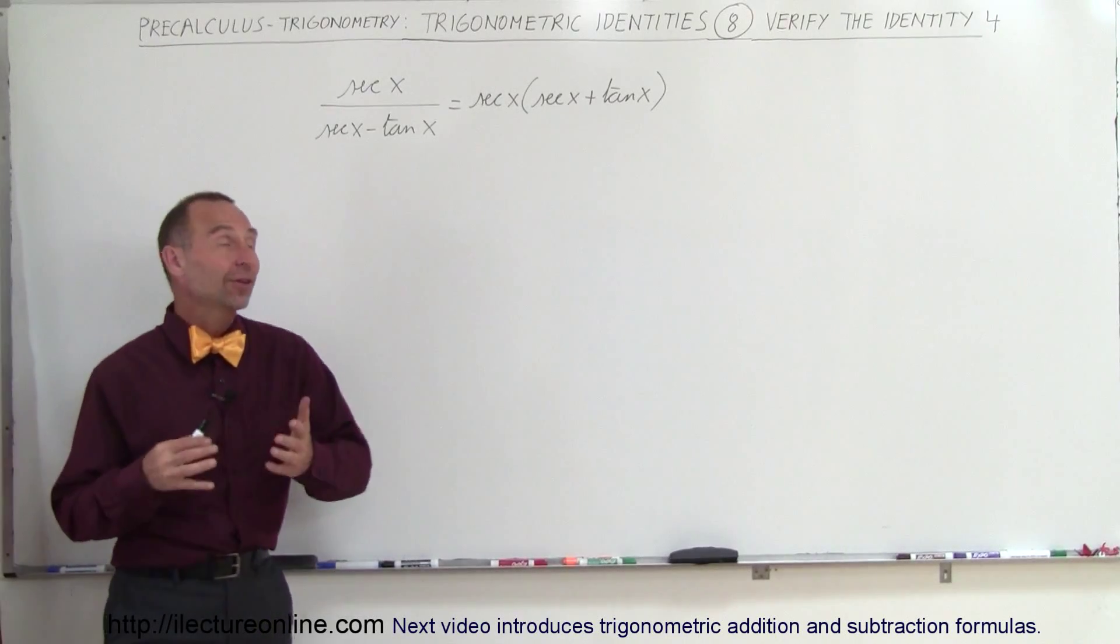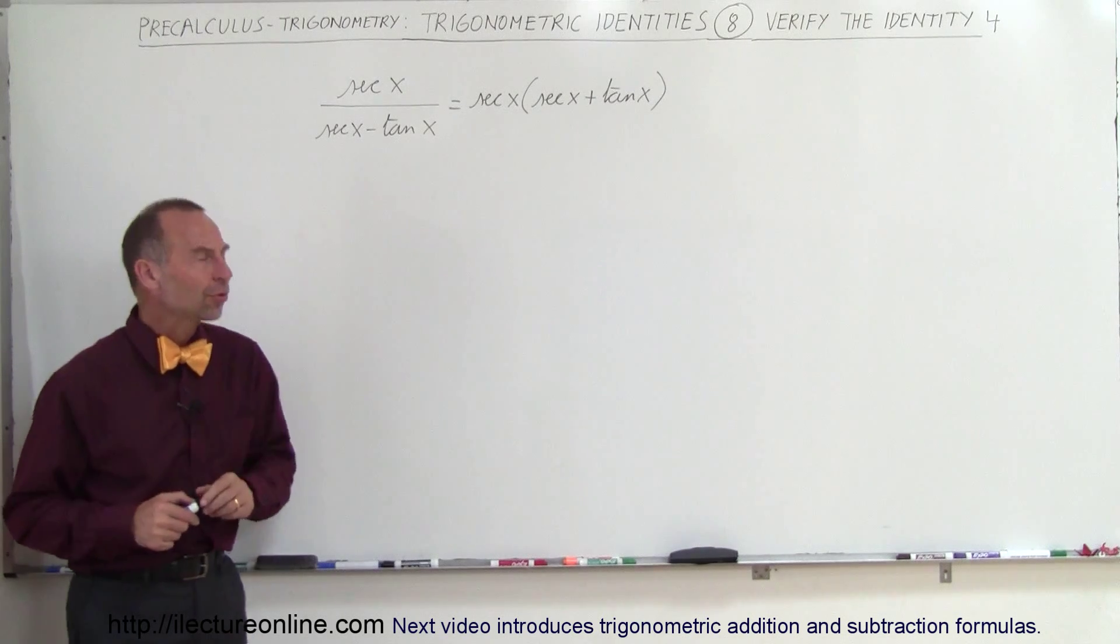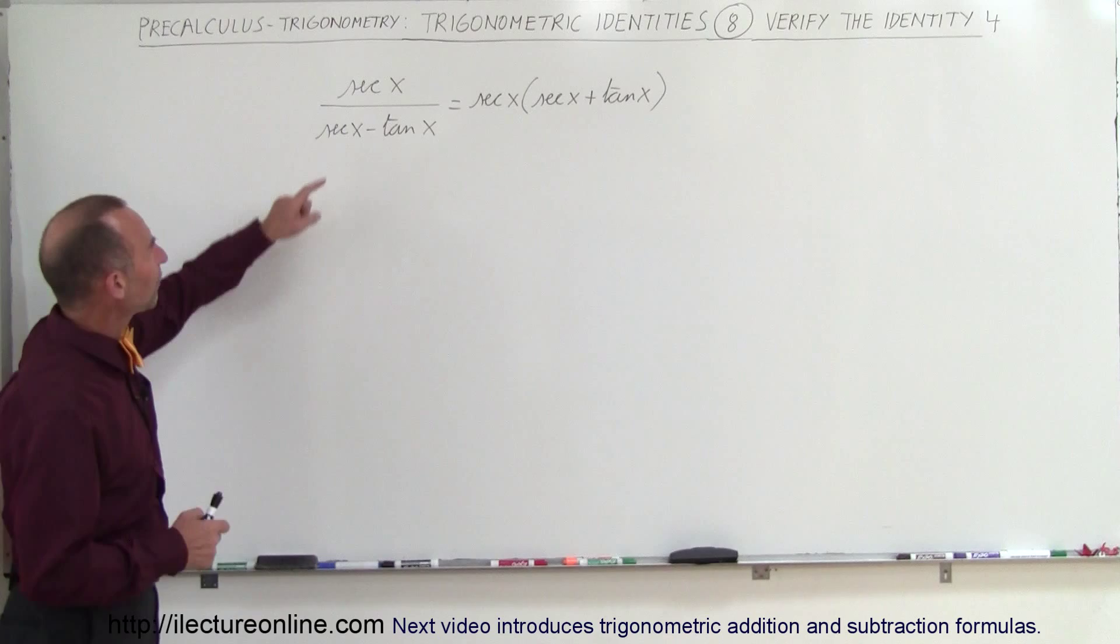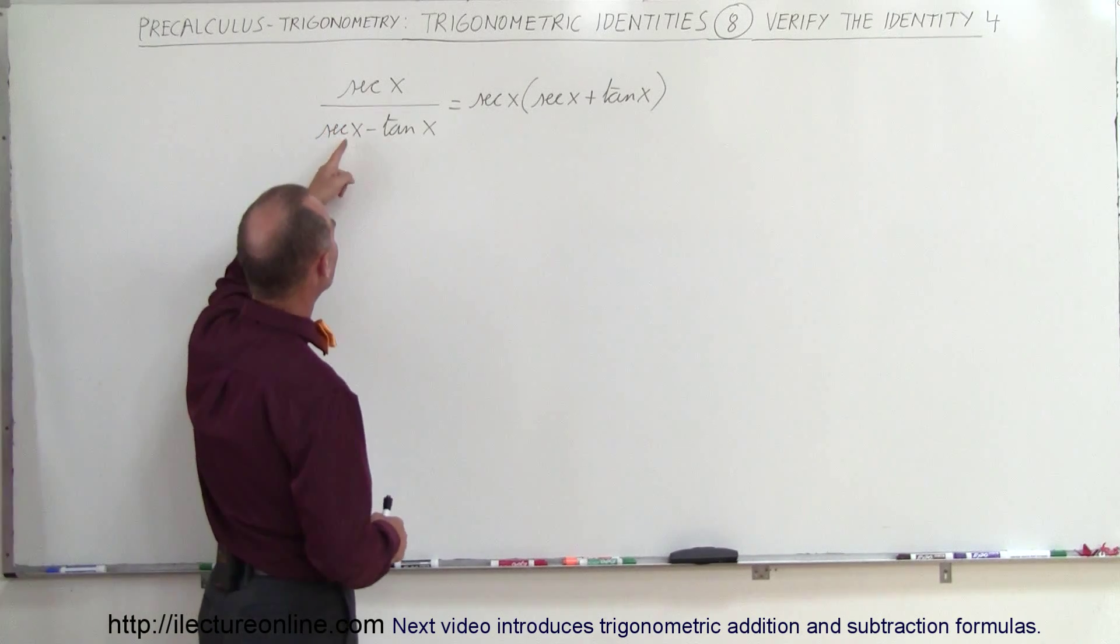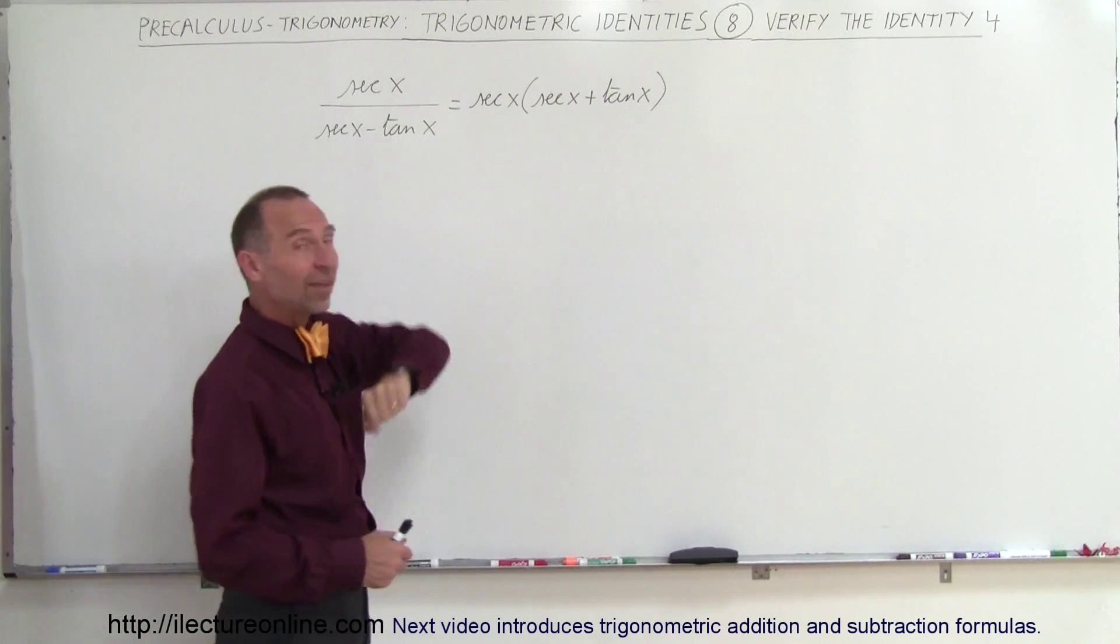Welcome to ElectronLine and here's another example on how to verify an identity. Now this one might be a little bit more challenging. So here we have something that, you look at that, we have a secant of x divided by secant of x minus tangent of x equals the secant of x times secant of x plus tangent of x.